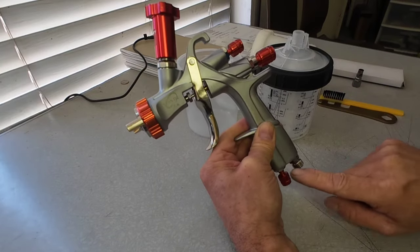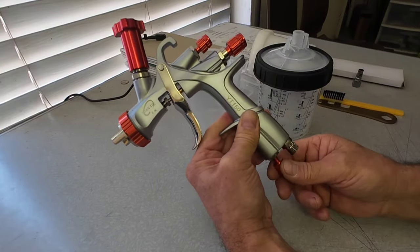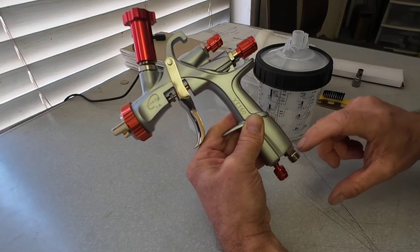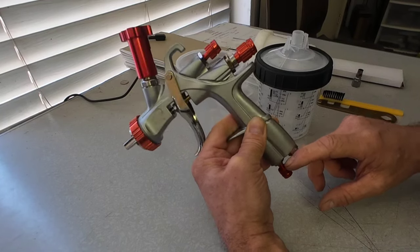Let me talk about how to set up this gun. This is your air pressure right here. I open this wide open because I'm going to use an air regulator and a water trap on this gun and we'll regulate our air there.